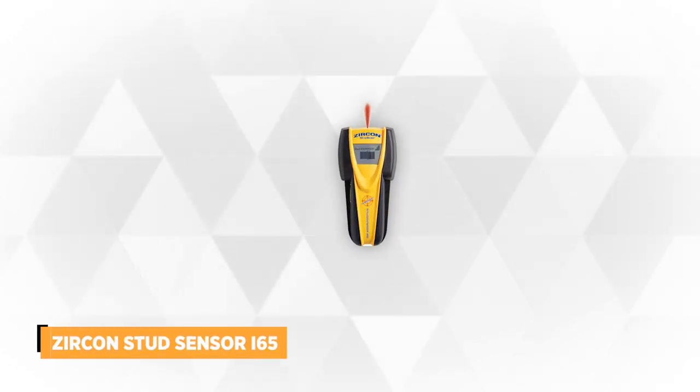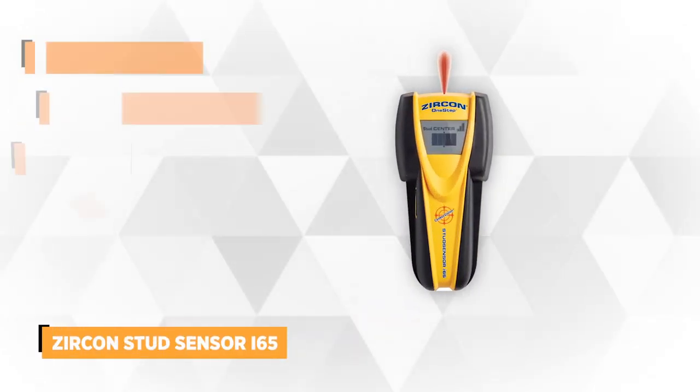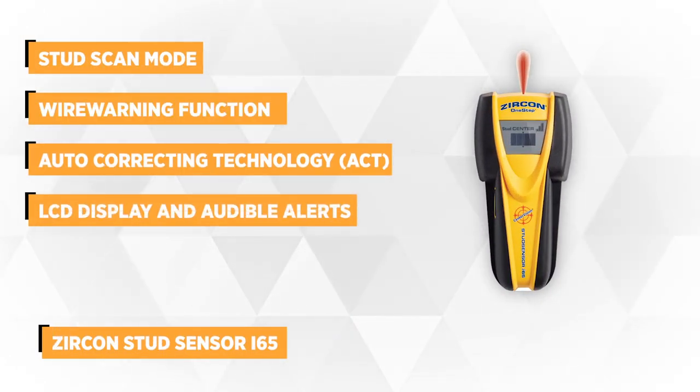At number two is the Zircon stud sensor i65, a handy gadget to have when mounting objects on drywall. With its unique center vision technology and spotlight pointing system, it expertly locates the center of a stud in one pass.